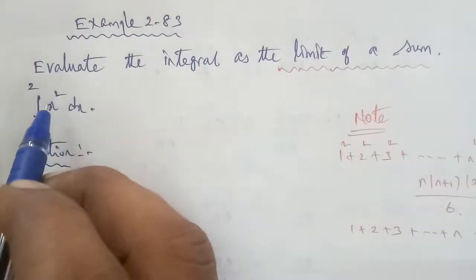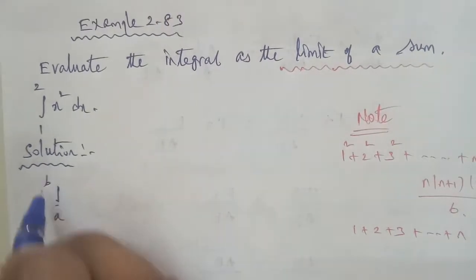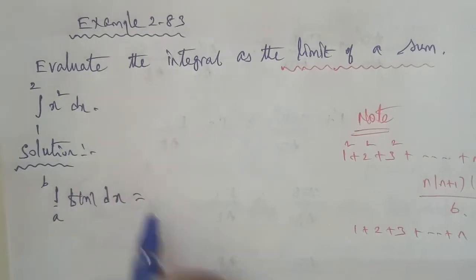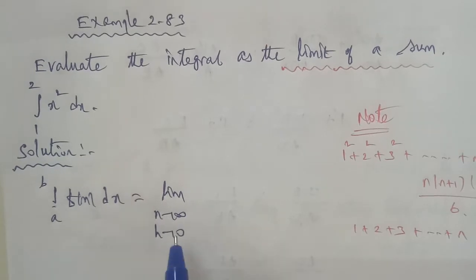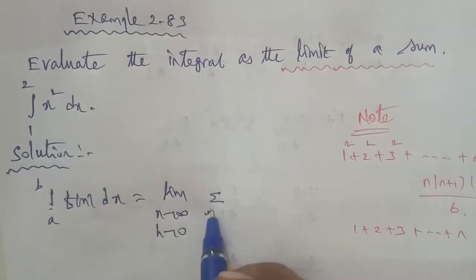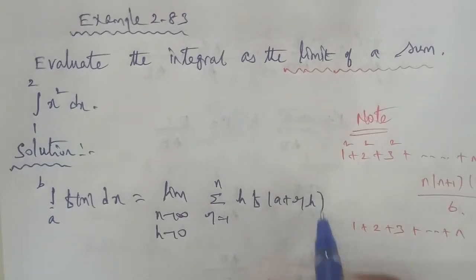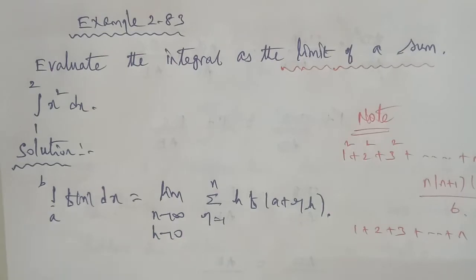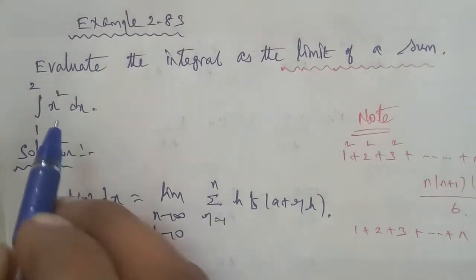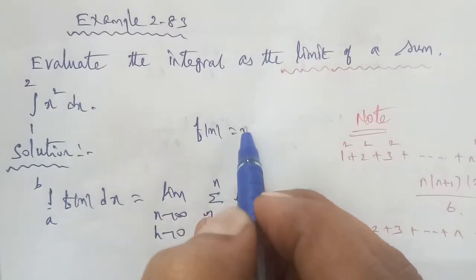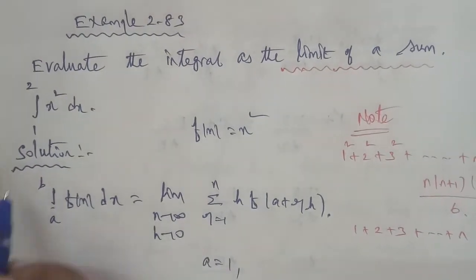So, in the sum formula, integral a to b f of x dx is equal to limit n to infinity, h tends to 0, sigma r is equal to 1 to n, h times f of a plus rh. In the formula and the question, we will compare it. f of x is equal to x squared, and the lower limit a is equal to 1 and upper limit b is equal to 2.